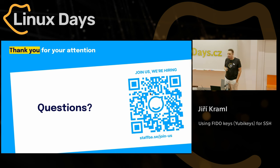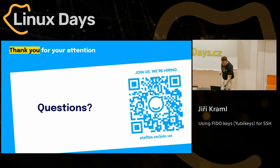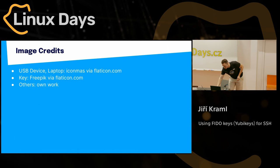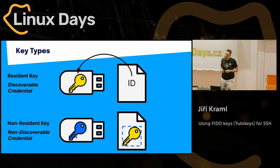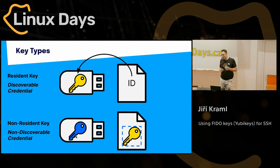I have a GoTrust key which doesn't have the capability to store anything on it, but it still has FIDO2 capability. If it can't store anything, what you essentially get is the previous use case where you do the storing of the private key on your device and that key is just there to do the crypto operations, but not the storage. Unfortunately I only have this one at the moment so I couldn't try it out, but that's the idea — that's how it should work.